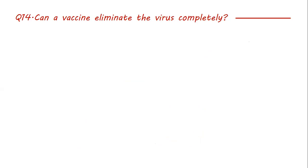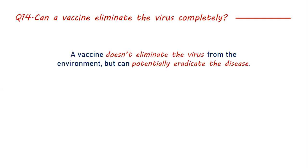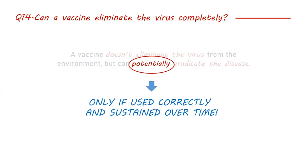Once the vaccine is released, can it eliminate the virus completely? Vaccines don't eliminate viruses — the virus will continue to be in the environment. What vaccines do is protect us from getting infected. In that sense, vaccines can potentially eradicate a disease, but only if they are used correctly and sustained over time. There are diseases that were eradicated or nearly eradicated, but when people stopped believing in vaccines and stopped vaccinating their kids, those diseases came back. There are diseases killing kids today that we hadn't seen in more than 70 years. You have to use vaccines correctly and sustain their use over time if you want a vaccine to eradicate a disease.